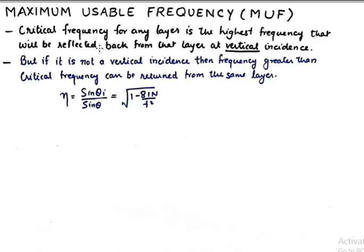If we do not send a vertical incidence signal then the frequency can be greater than that of the critical frequency and it can return back from the same layer.